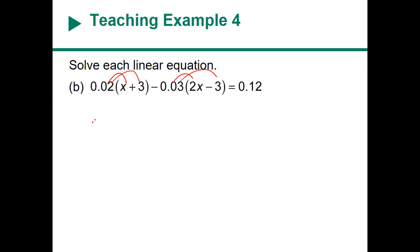When I distribute, I'm left with 0.02x plus 0.06 minus 0.06x plus 0.09 equals 0.12. So I eliminate the parentheses and then I'm going to combine like terms.